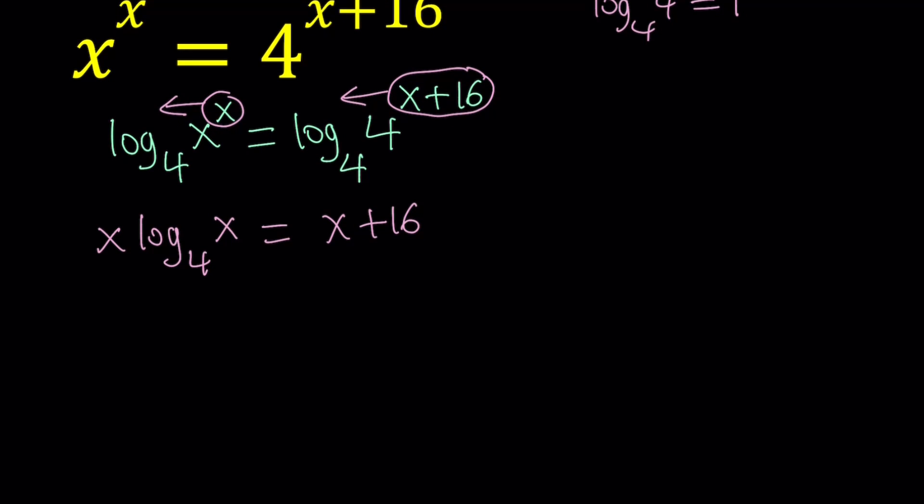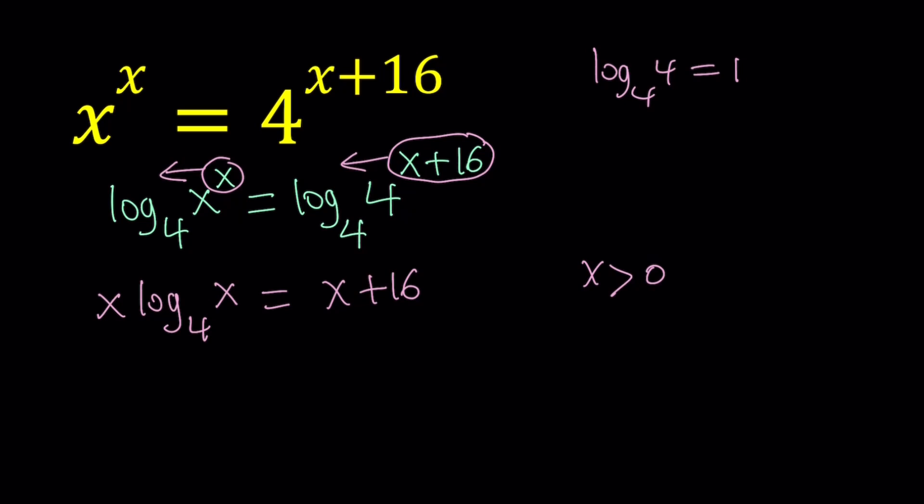But of course, when you log both sides, you have to think about the domain. Obviously x has to be positive. And when x is positive, this is well-defined. If you go back to the original equation, it also requires that x is greater than 0 because x to the power x is a weird function and it's not well-defined for negatives. It kind of jumps around. So if you think about the graph of this, basically this is what x to the power x looks like.